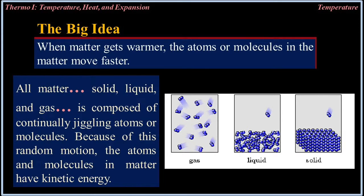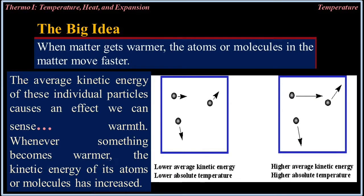The big idea: When matter gets warmer, the atoms or molecules in the matter move faster. All matter — solid, liquid, and gas — is composed of continually jiggling atoms or molecules. Because of this random motion, the atoms and molecules in matter have kinetic energy. The average kinetic energy of these individual particles causes an effect we can sense: warmth. Whenever something becomes warmer, the kinetic energy of its atoms or molecules has increased.